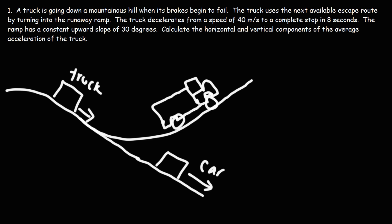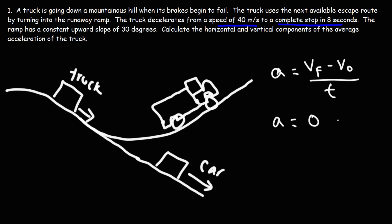How can we calculate the acceleration of the truck? The acceleration is the change in velocity divided by the time — V final minus V initial over T. We know the truck decelerates from 40 meters per second to a complete stop in 8 seconds. So the final velocity is zero, the initial velocity was 40, giving us negative 40 over 8, which equals an average acceleration of negative 5 meters per second squared.